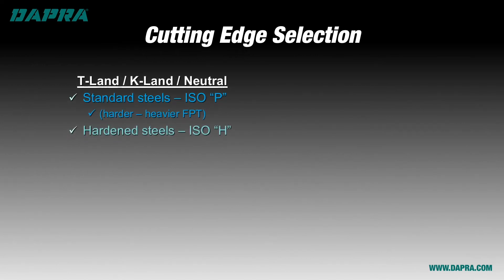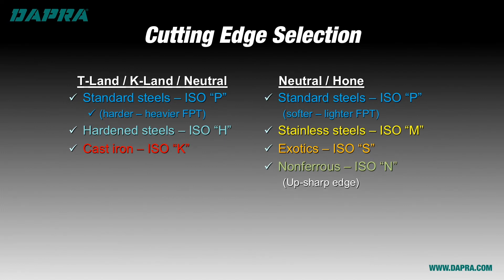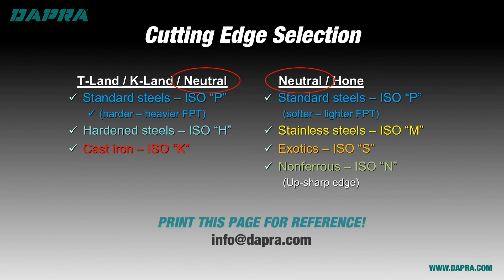Here is a quick summary page for your reference. Use the stronger edges for the stronger materials and use the sharper edges for the softer materials or where the high shear cutting action is necessary for reducing heat or tool pressure. Note that the neutral edge is the most versatile, suitable for a variety of materials and applications, and producing a middle-of-the-road amount of pressure and burr — it's a very good first choice for job shops to use as an all-around cutting tool. We suggest pausing your video playback and printing this page for future reference, or email us at info@dapra.com with a request for this page.